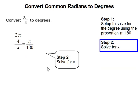Step 2. Solve for x. So to solve for x using proportion, we simply cross multiply. 3 pi over 4 times 180 equals pi times x.